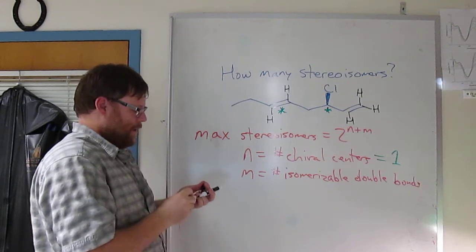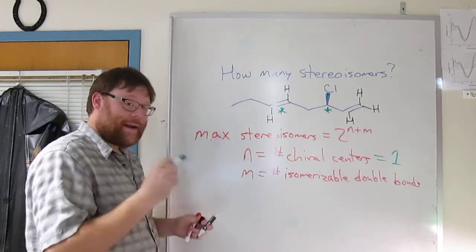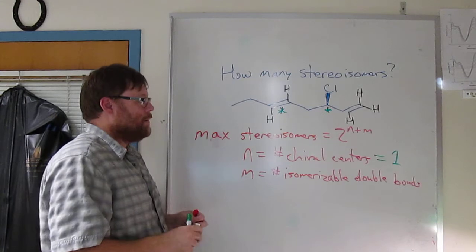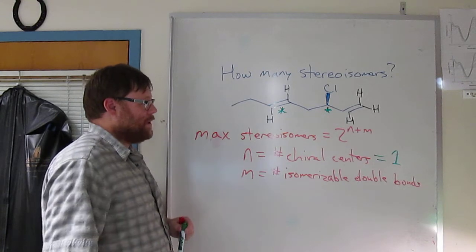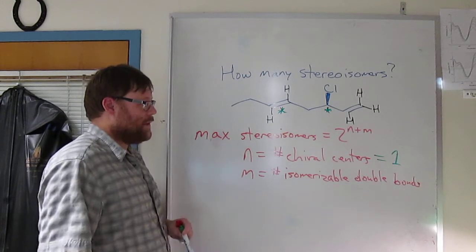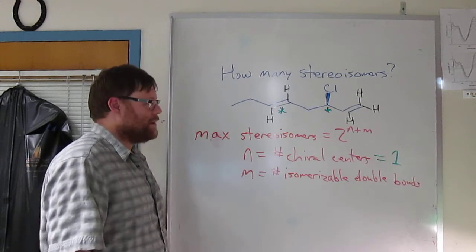So then what about that alkene down at the end? Is that an isomerizable double bond? Go ahead and ask yourself, maybe hit pause, consider whether or not that bond is isomerizable.